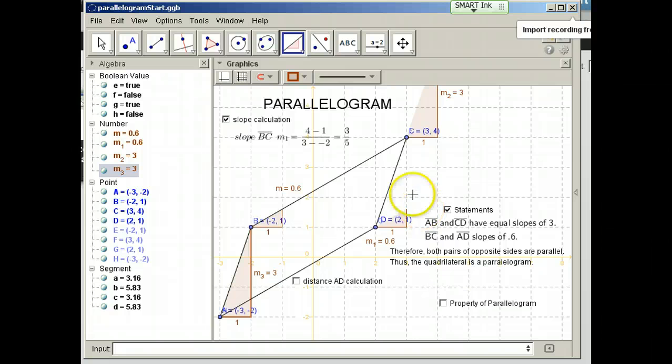Therefore, both pairs of opposite sides of this quadrilateral are parallel. And if that is true, thus, the quadrilateral is a parallelogram.